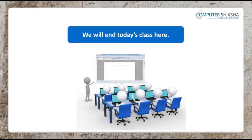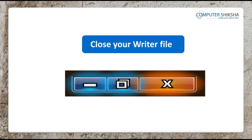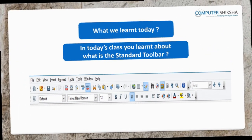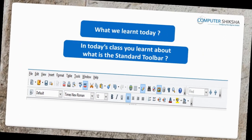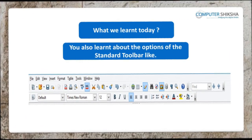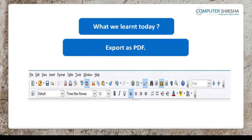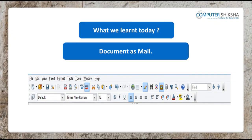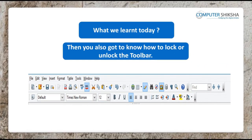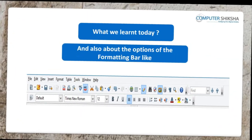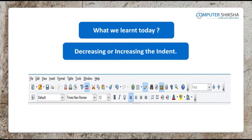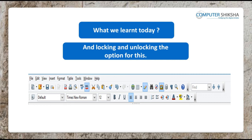We will now end today's class. All of you should close your Writer file and properly shut down your computer. In today's class, you learned about the standard toolbar and its options: save, new, open, export as PDF, document as mail, and hyperlink. You also learned how to lock or unlock the toolbar, and about the formatting bar options like decreasing or increasing the indent and locking or unlocking the toolbars.